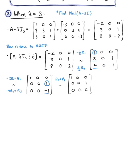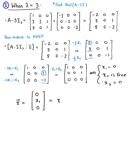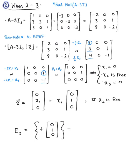We have attained RREF, which tells us x sub 1 equals 0, x sub 2 is free, and x sub 3 equals 0. Writing the general solution, we get x sub 2 times the vector 0, 1, 0. So the eigenspace e sub 3 is the set of all scalar multiples of the vector 0, 1, 0, equivalently the span of {0, 1, 0}.